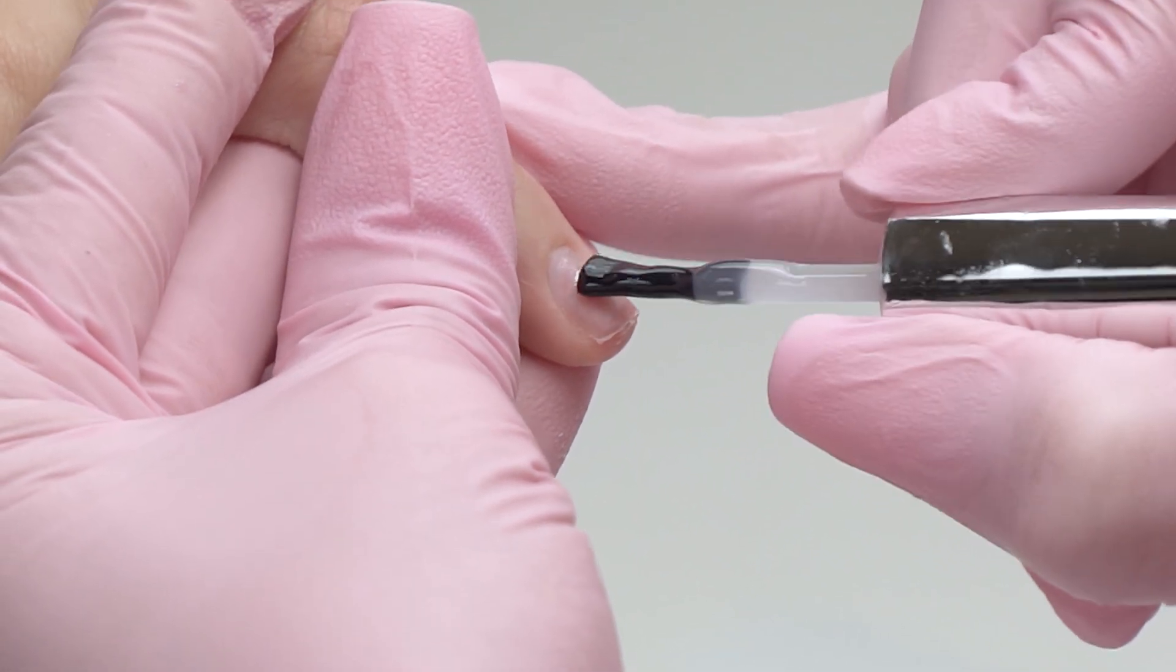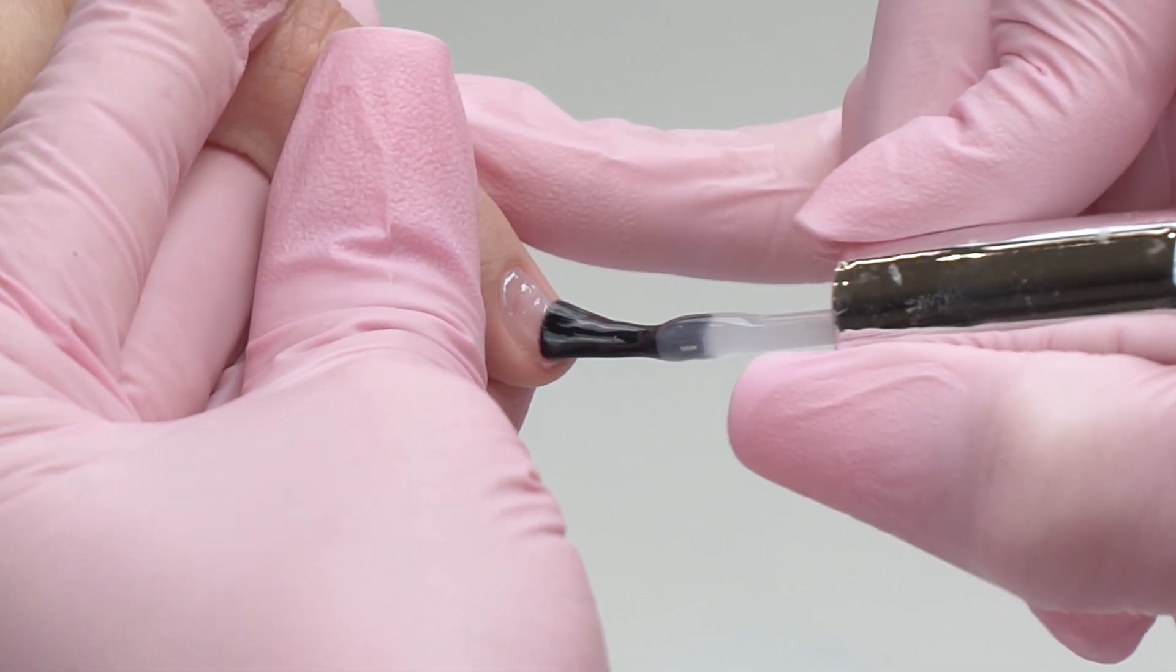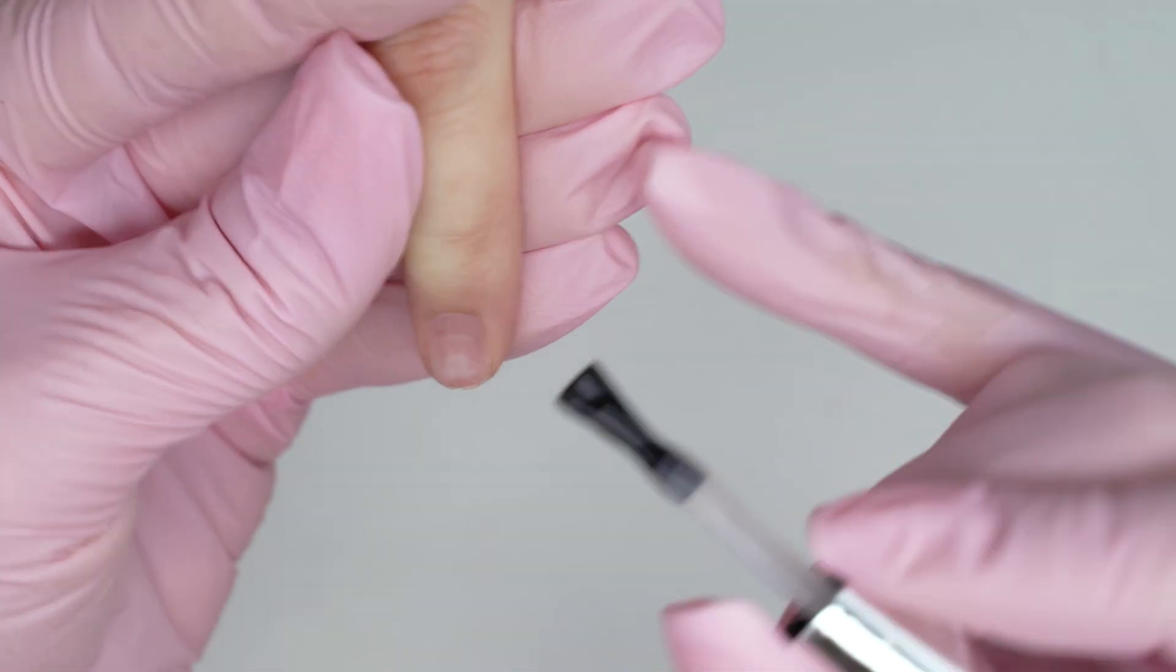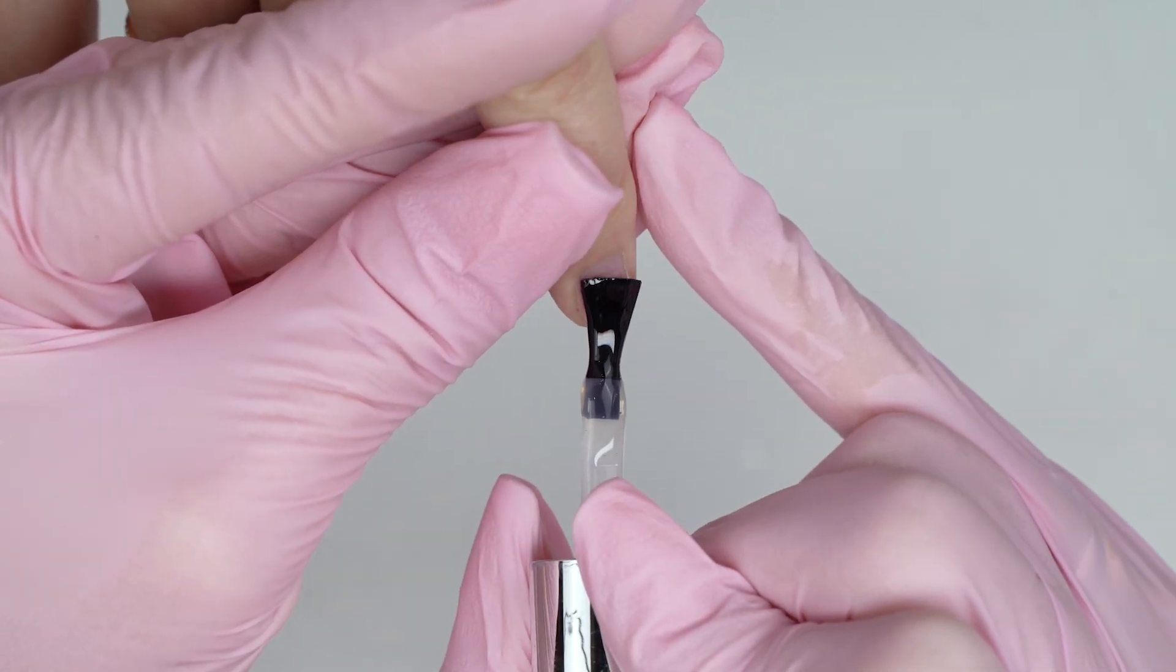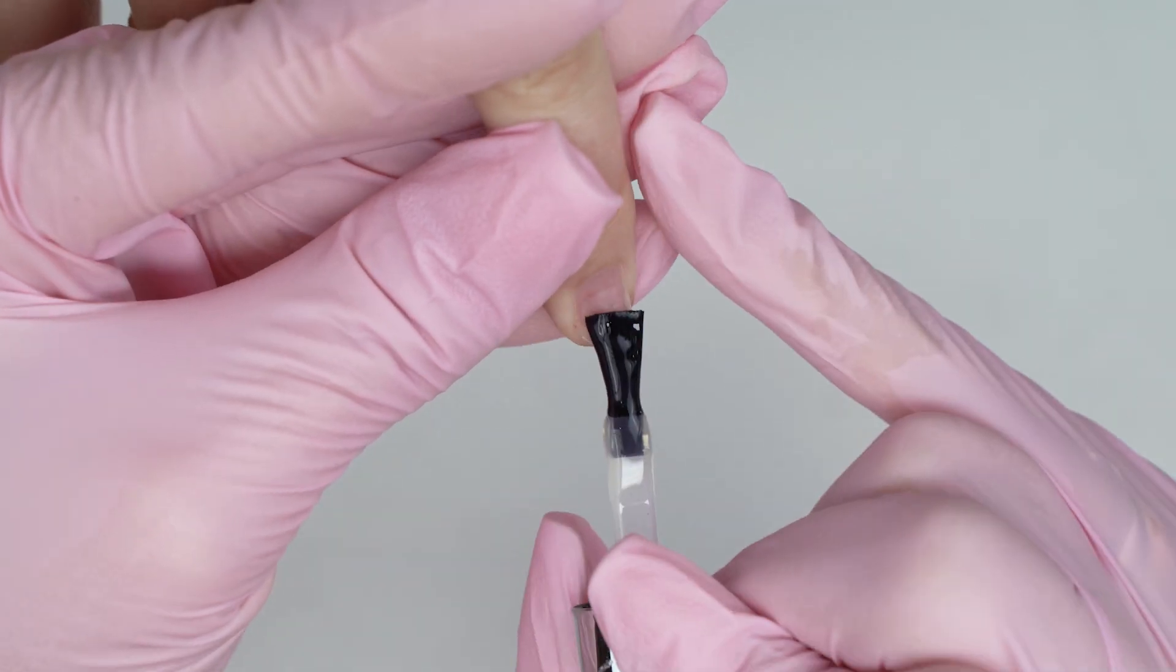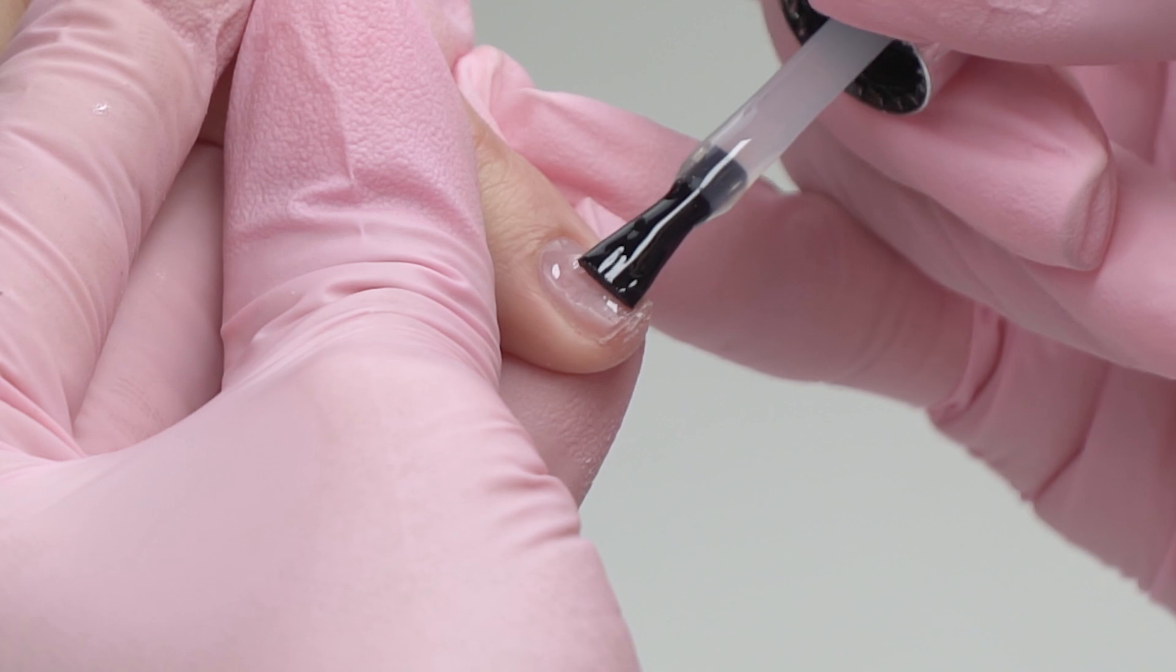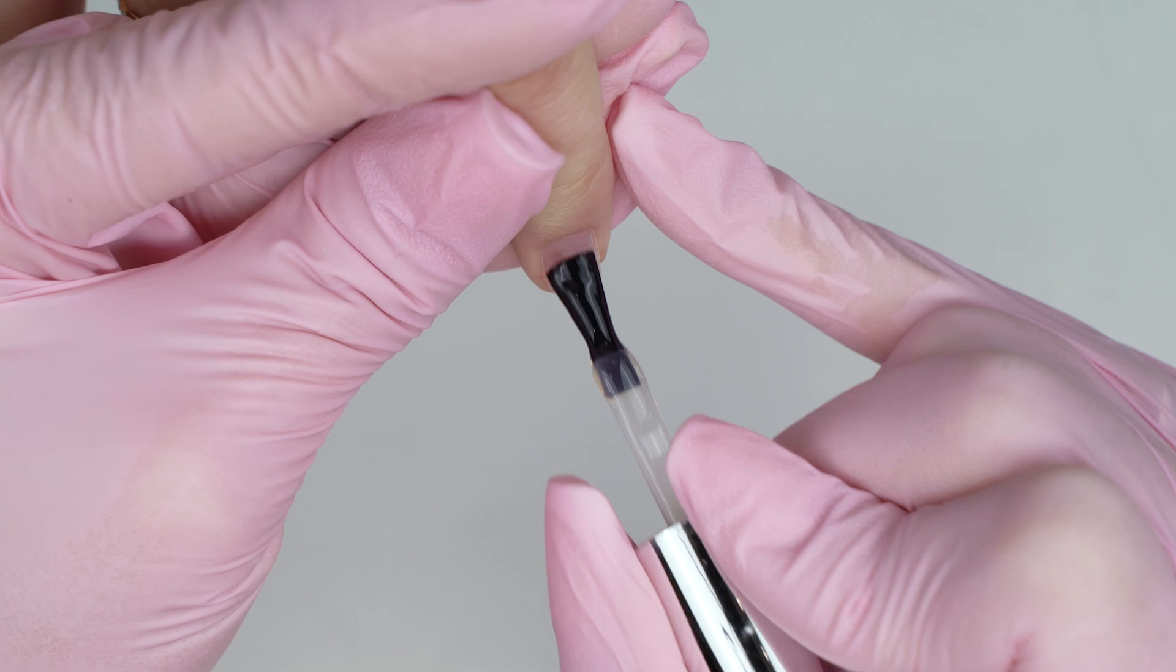Try to get as close to the cuticle line as possible at this point. Otherwise, if there is no base coat between the nail and the gel, there is a chance of peeling in the cuticle zone. Avoiding this is the main criterion of a long-lasting coating. By the way, doing a nail fill, we can put a base coat on the natural nail only. Don't cover up the free edge unless you want to.